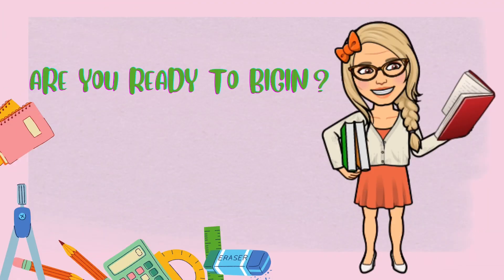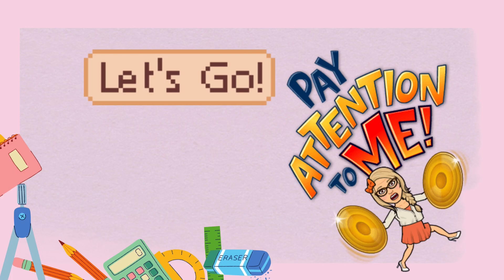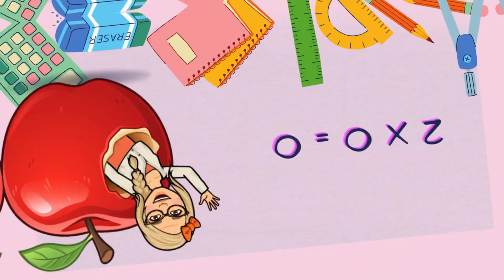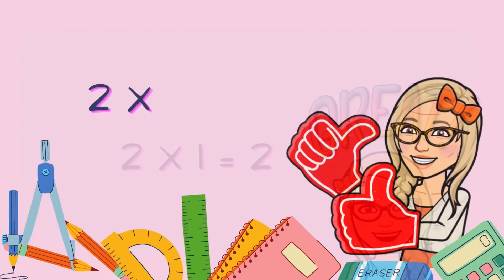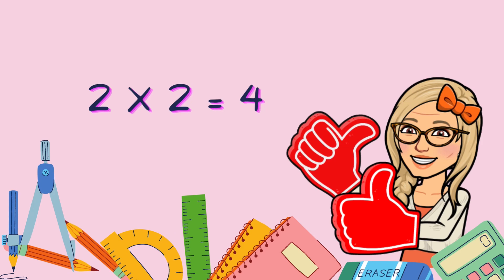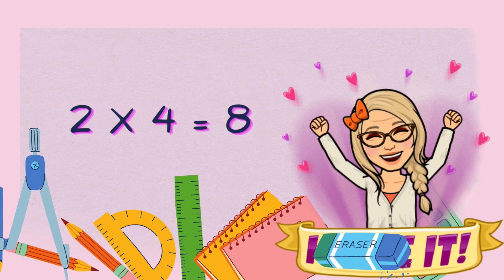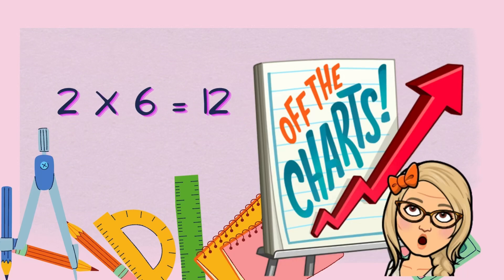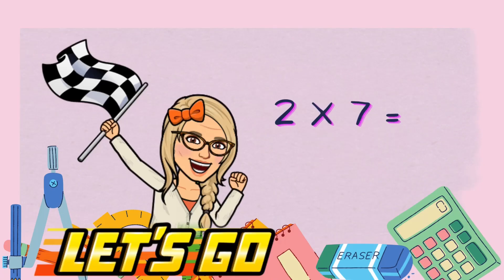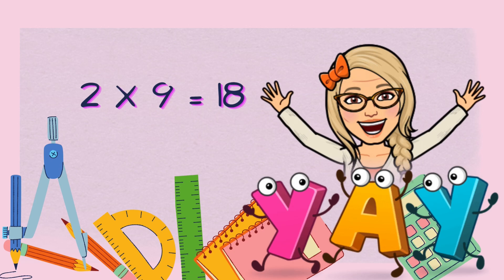So let's do it — are you ready to begin? Here we go! Two times zero: zero. Two times one: two. Two times two: four. Two times three: six. Two times four: eight. Two times five: ten. Two times six: twelve. Two times seven: fourteen. Two times eight: sixteen. Two times nine: eighteen.